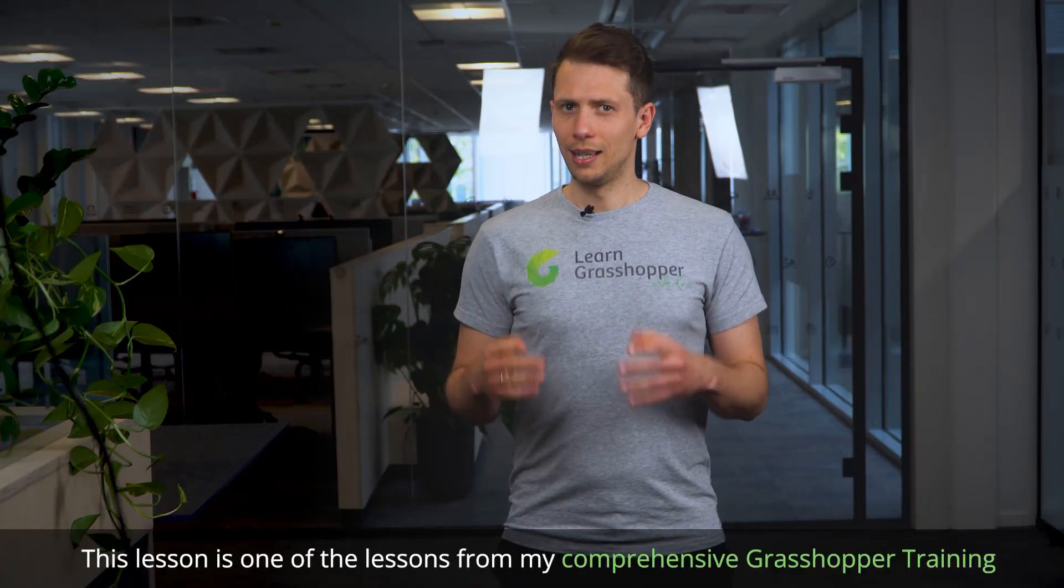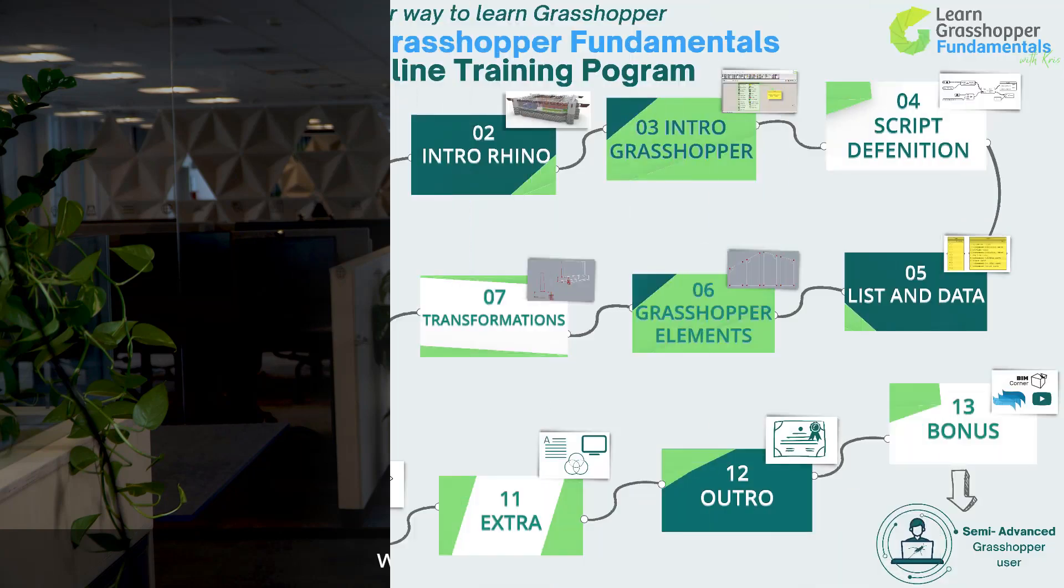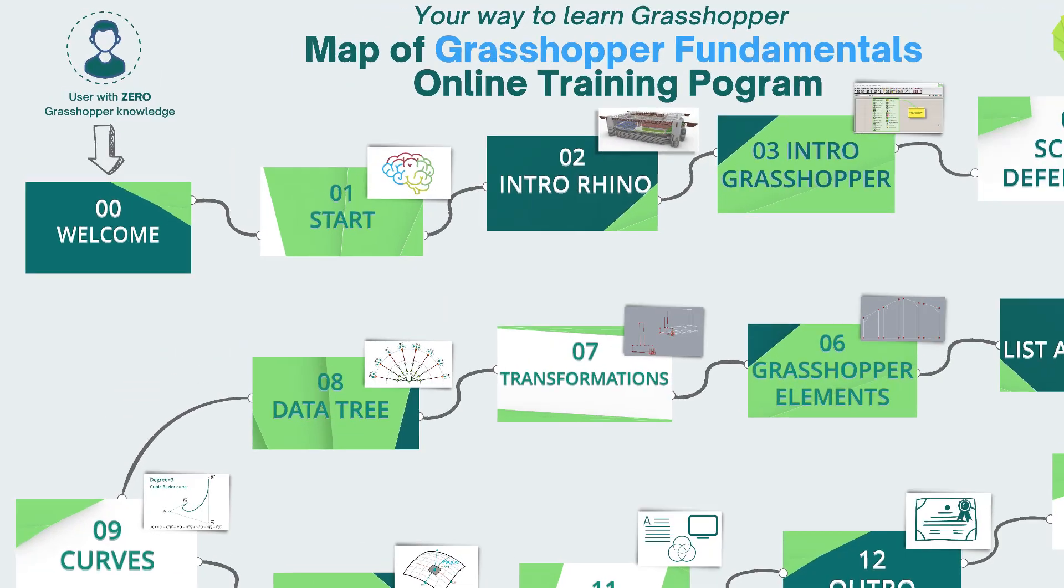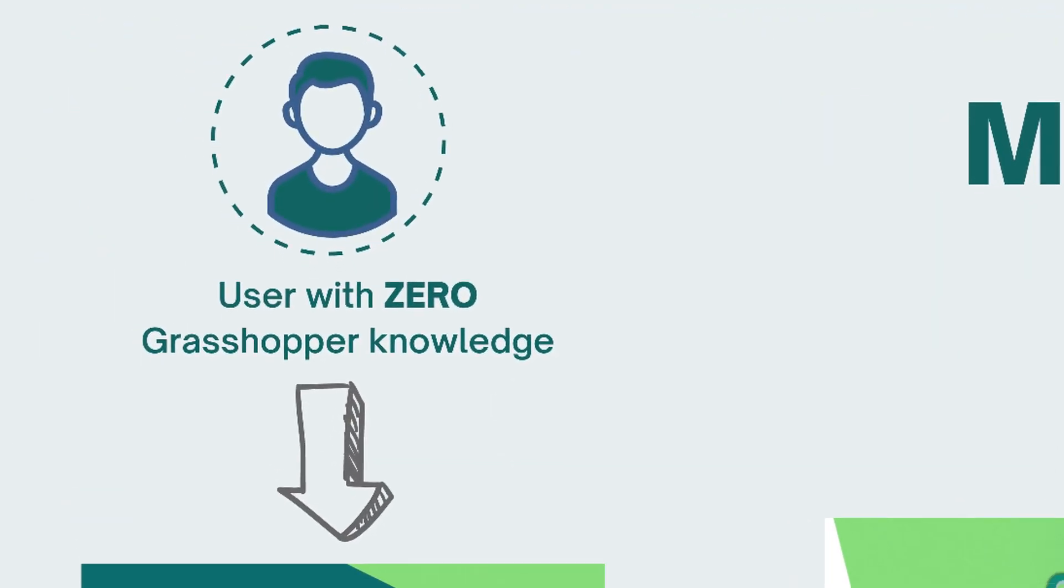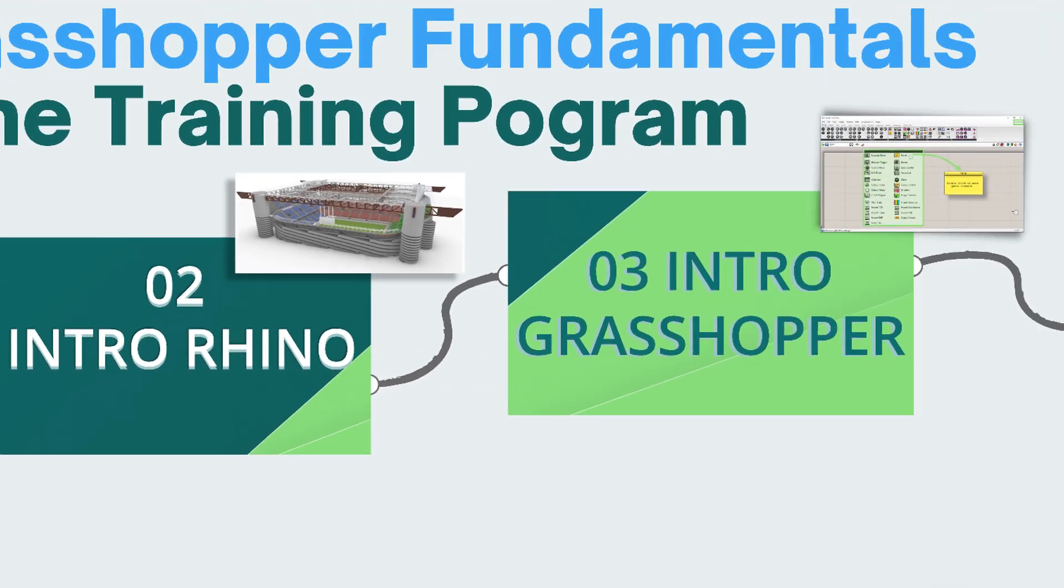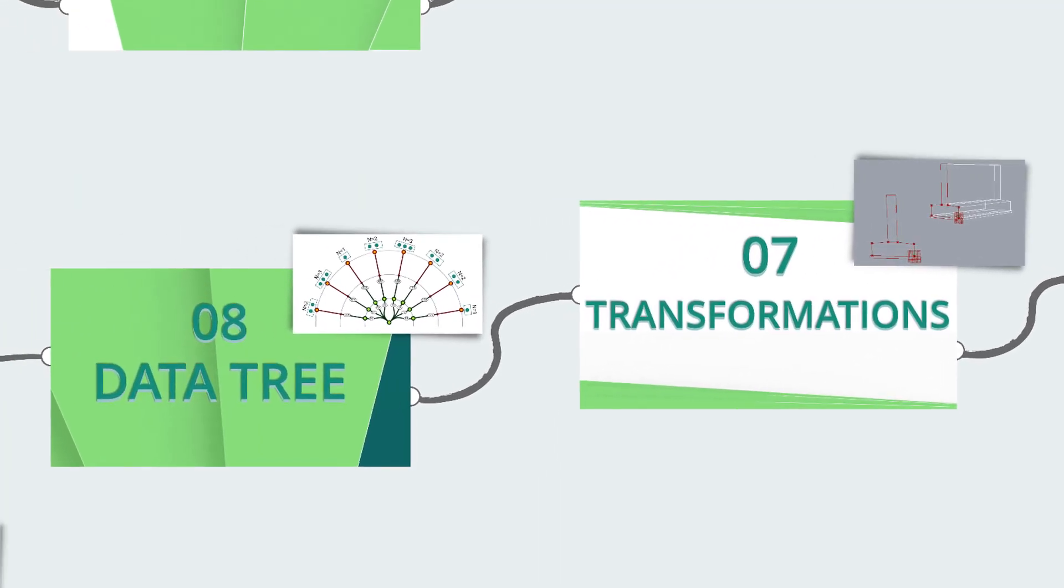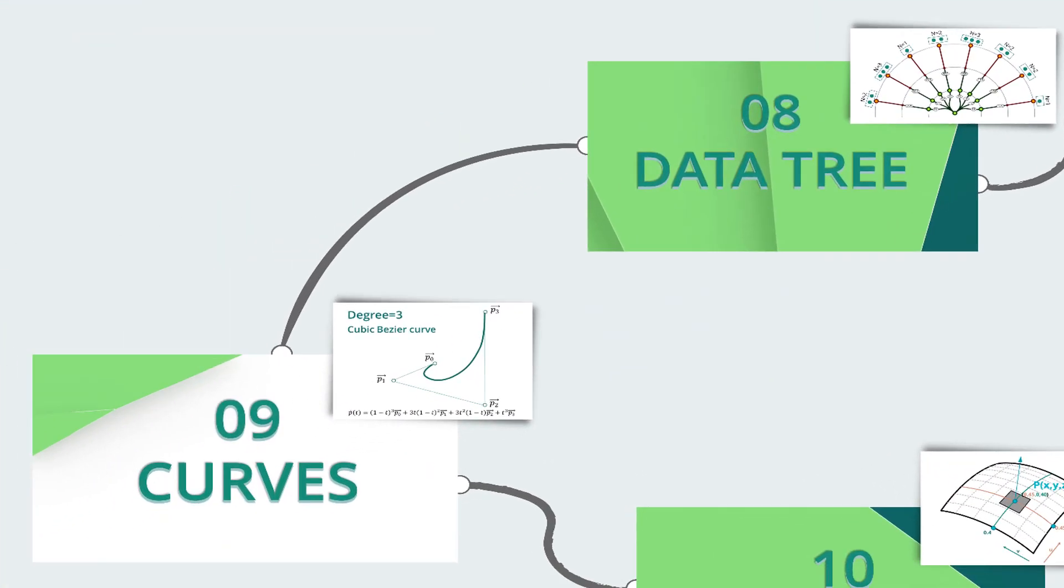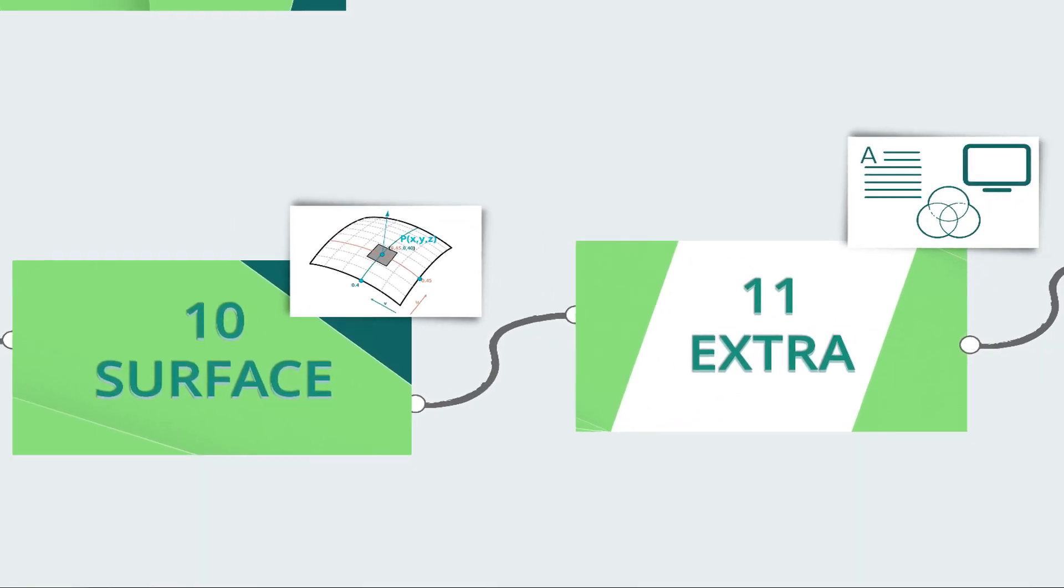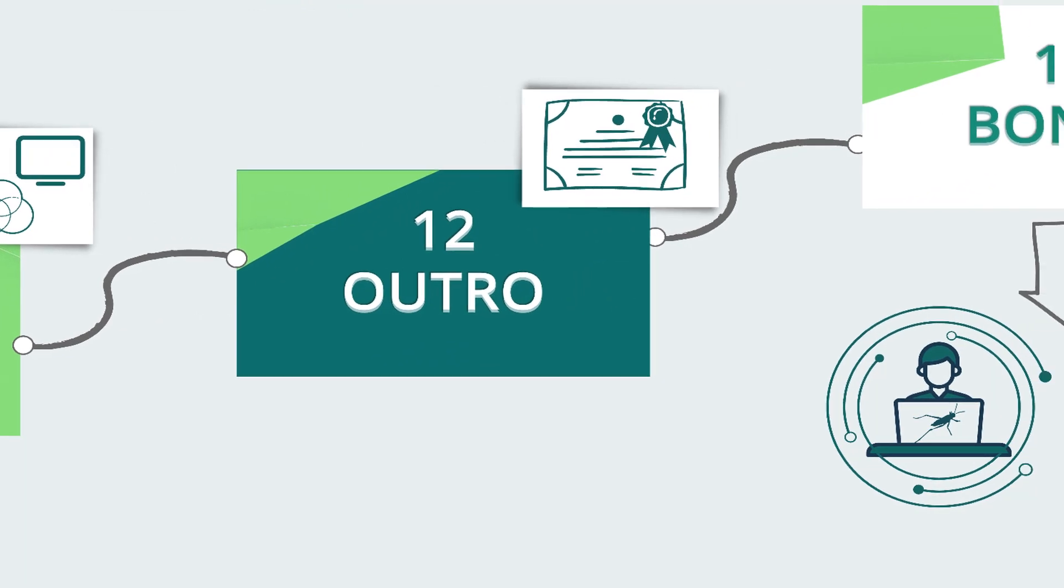This lesson is one of the lessons from my comprehensive Grasshopper training where I take users from zero programming experience through step-by-step 13 well-structured modules with more than 300 practical exercises. This training is the first step to becoming an engineer from zero with skills that allow automating time-consuming work and taking design to the next level.